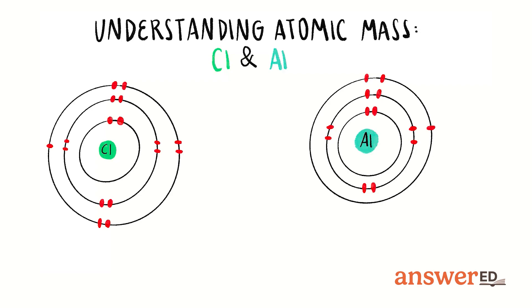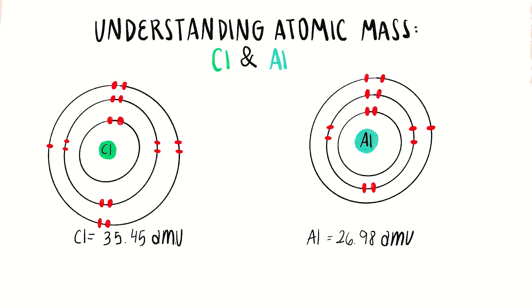For example, chlorine has an atomic mass of 35.45 amu, and aluminum is 26.98 amu.